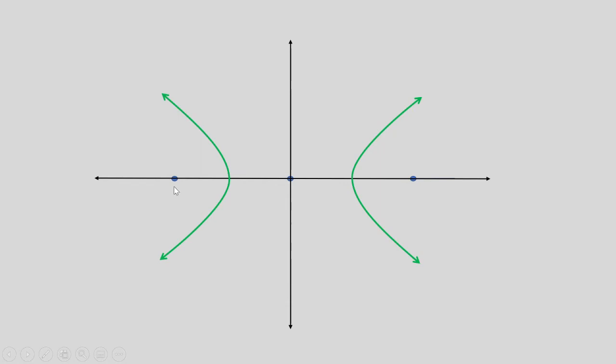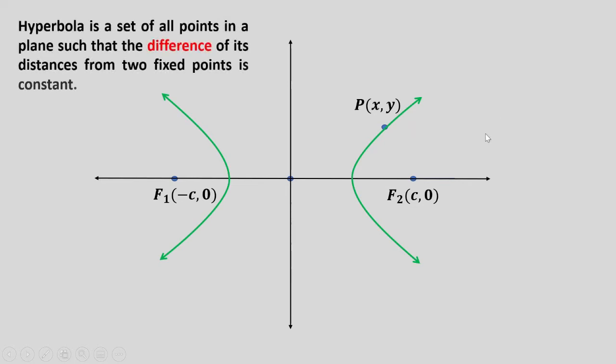Let's say these are our fixed points: negative C, 0 and C, 0. Now let us choose a point on the curve, say point X, Y. Hyperbola is defined as a collection of all points such that the difference of its distances from two fixed points is constant.